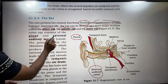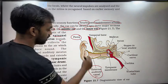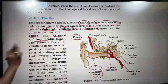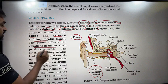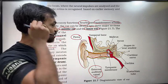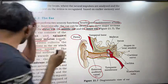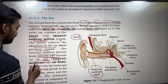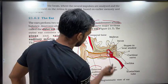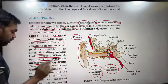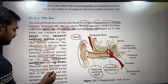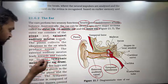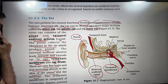The outer ear consists of the pinna and the external auditory meatus. Meatus is a canal — a pathway. The pinna collects vibrations in the air which produce sound. The external auditory meatus leads inward and extends up to the tympanic membrane. There are very fine hairs and wax-secreting glands in the skin of the pinna and the meatus.